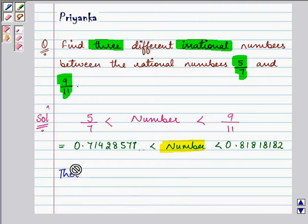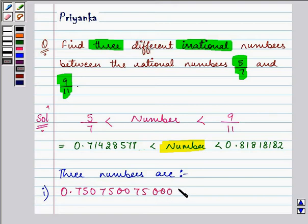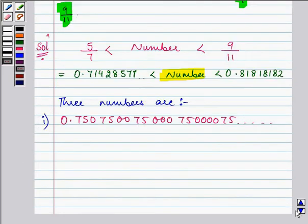So three numbers which we are giving to you are 0.750750007500075000750007540000754075 and so on. These are irrational numbers that means they are non-terminating, non-recurring numbers.